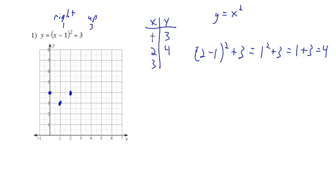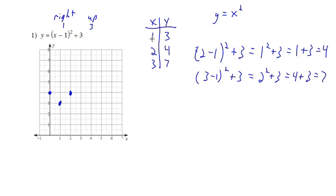Moving over 2 units from the vertex, substituting x = 3: 3 minus 1 squared plus 3 gives us 2 squared plus 3 equals 4 plus 3 equals 7. Sure enough, when we went over 2, we went up 4 — just like in the parent graph. So the point (3, 7) is on the graph, and over 2 up 4 in the other direction as well. Now we have a pretty accurate sketch of our graph.